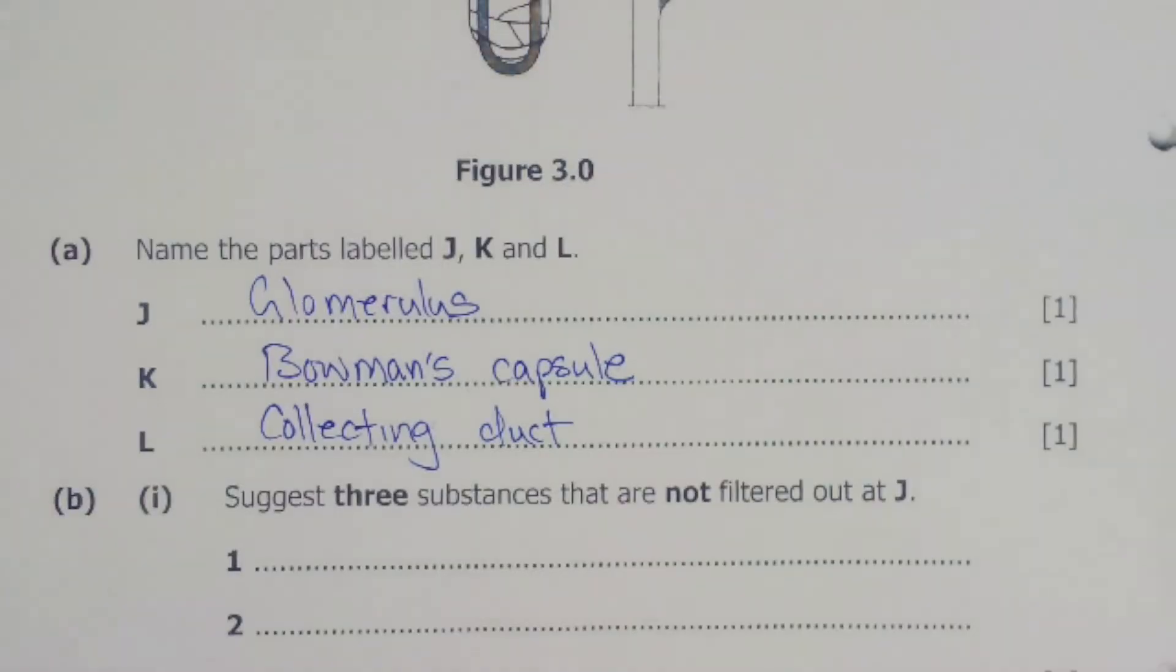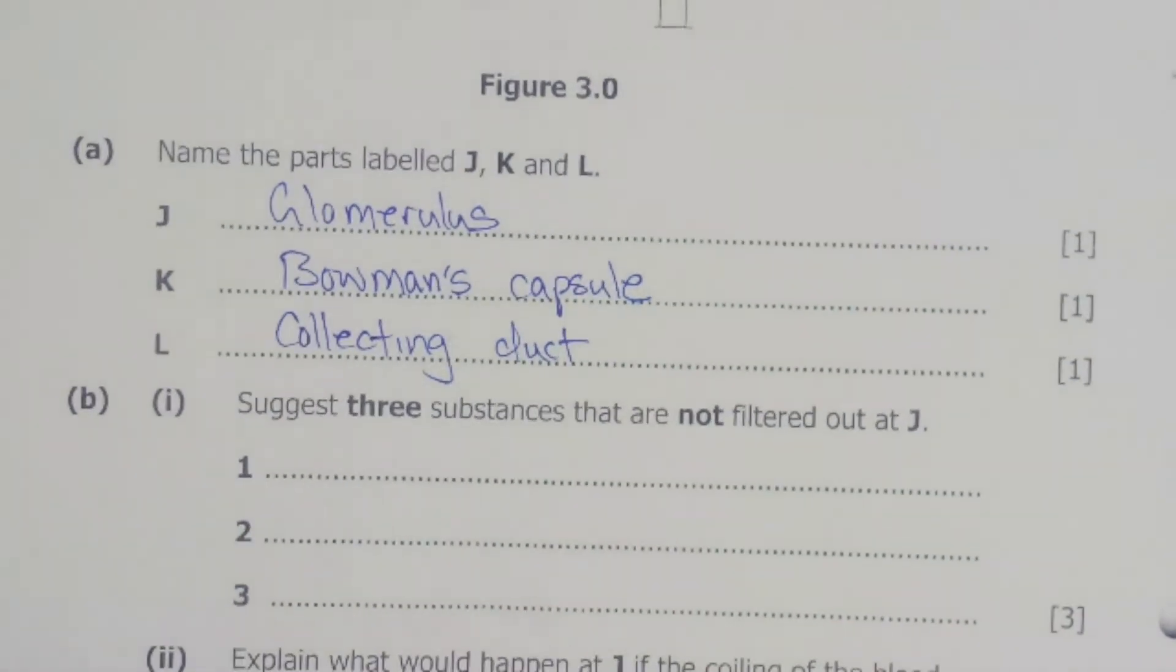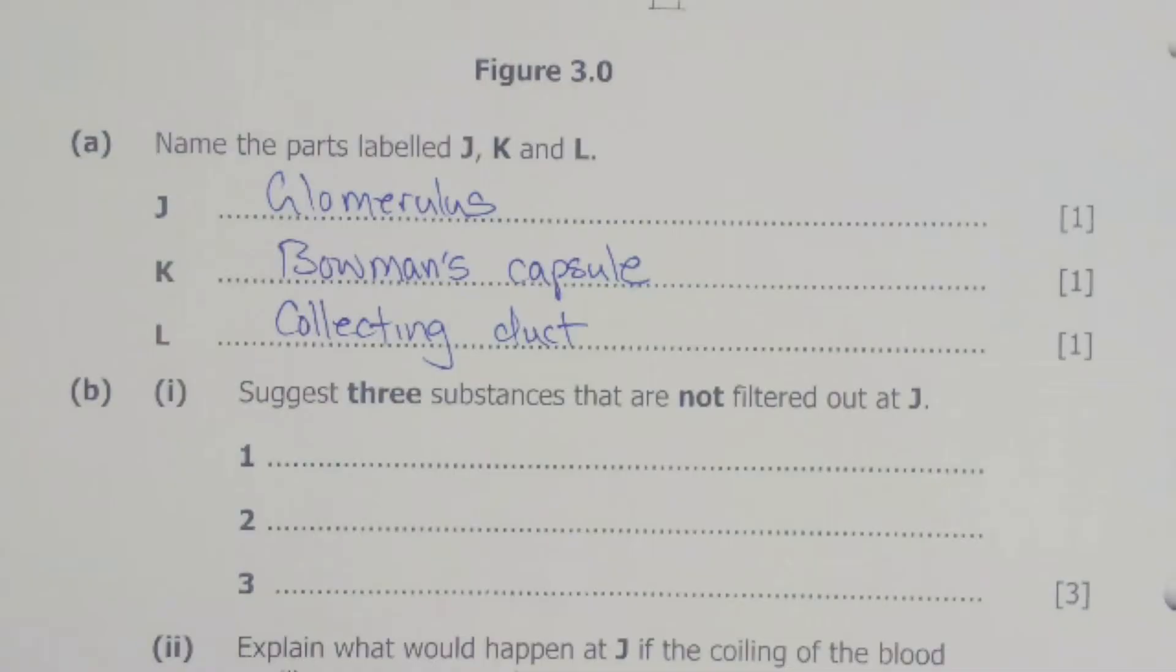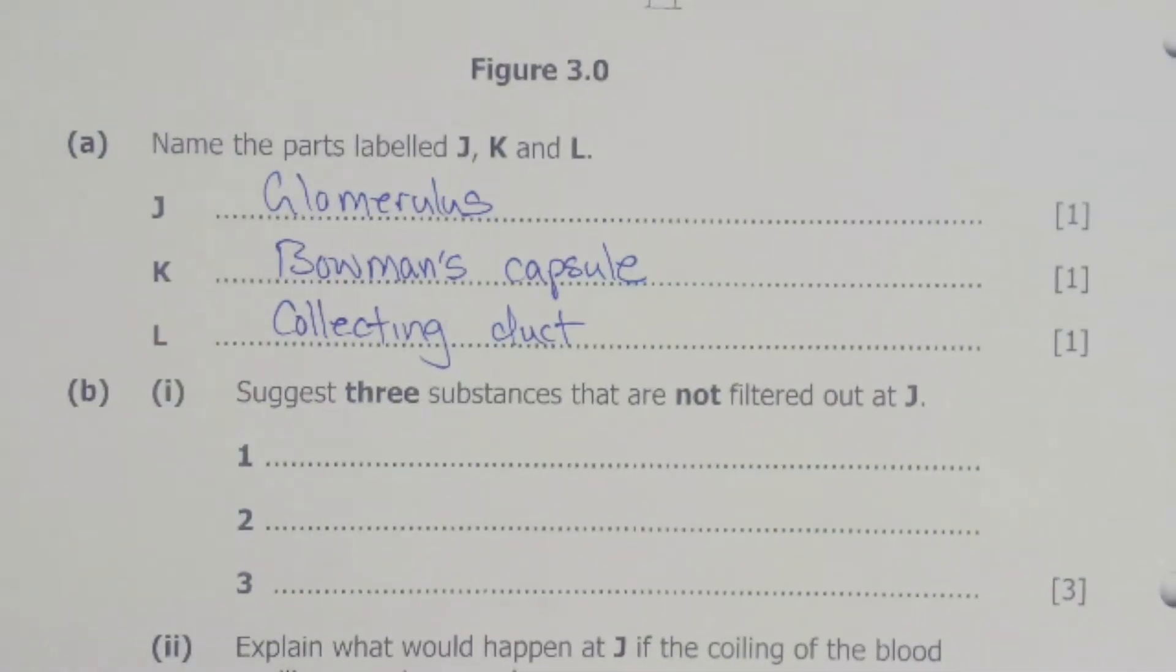Let's move on to the next part. The next part of the question is B1. B1 says: Suggest three substances that are not filtered by part J. So we are talking about the Bowman's capsule. In blood, what is not filtered are the large particles or molecules.